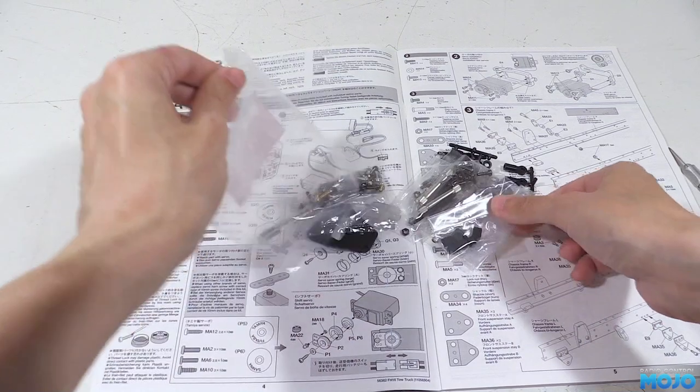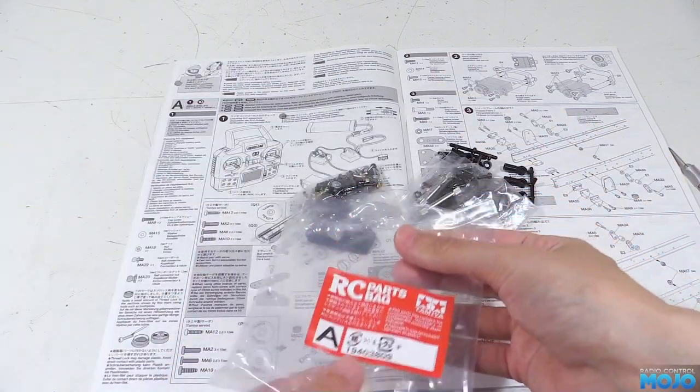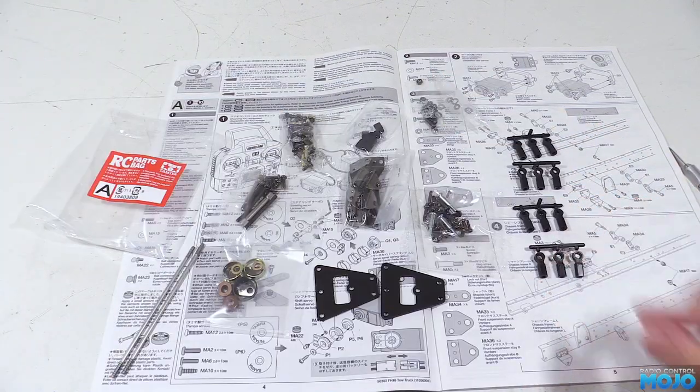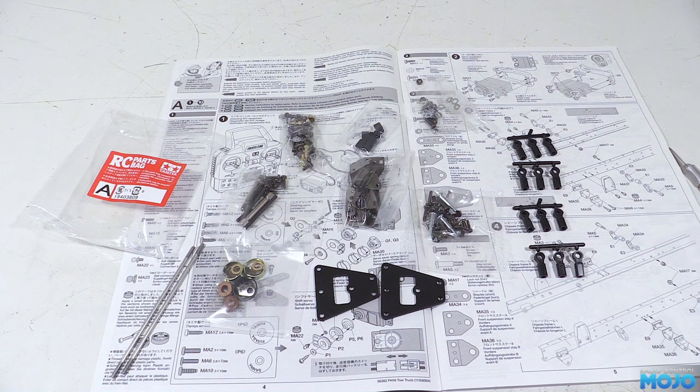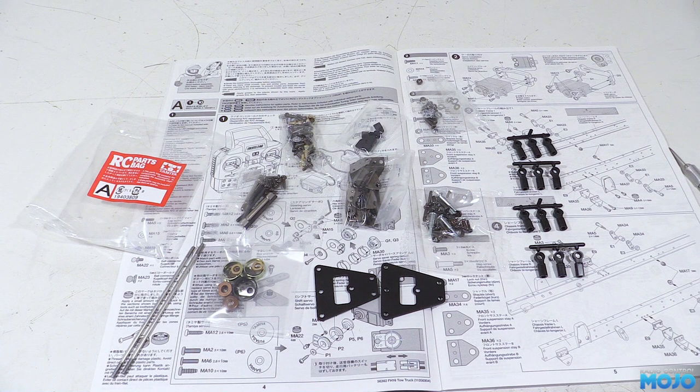In bag A then we have a few bits and bobs. There's a couple of screws bags, the rubber bump stops for the rear suspension, all the brackets for the front leaf springs, lots of rod ends for the steering, a couple of rods, the servo saver springs and the brackets for the rear suspension.